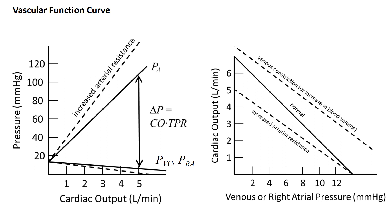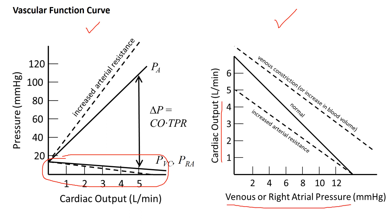On the left, the same plot we just looked at. On the right, looking at the same data in a slightly different way — we're zoomed in on the venous curve and the axes are flipped. The reason for switching the axes will become apparent later. Cardiac output is now on the y-axis and pressures are on the x-axis. As cardiac output increases, venous pressure goes down; as cardiac output goes down, venous pressure increases.